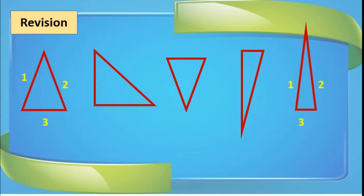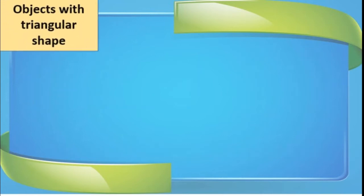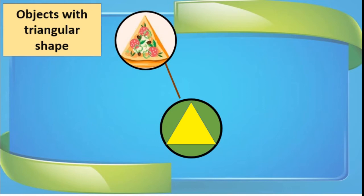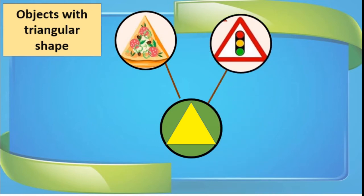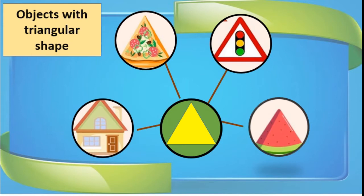Guess the name of this. You are right — that is nothing but triangle. Three-sided closed figures are called triangles. The objects of this shape include a piece of pizza, a signal board, a piece of watermelon, and the upper portion of a house. These all show a triangular shape. Many more objects with this shape are there in our surroundings.